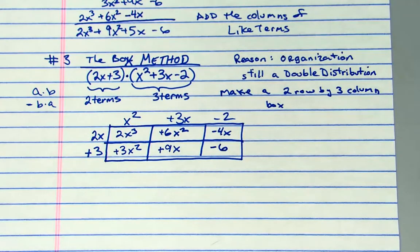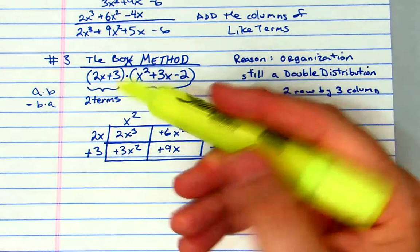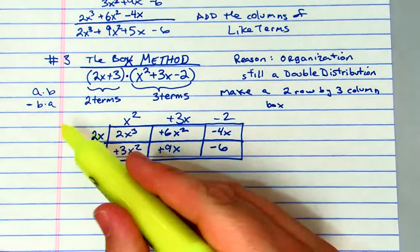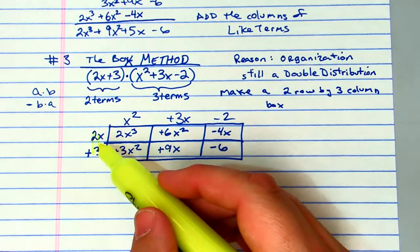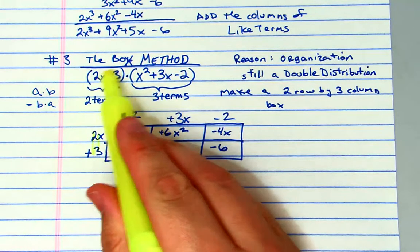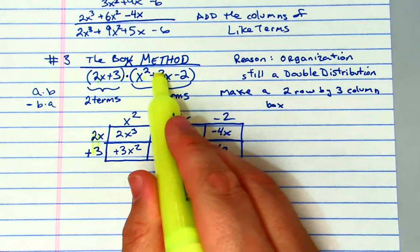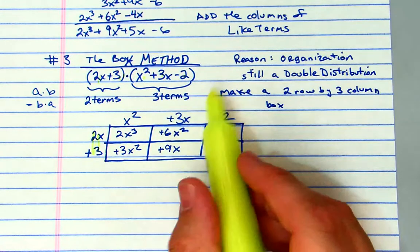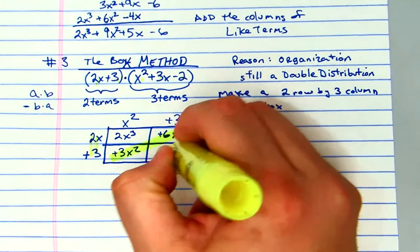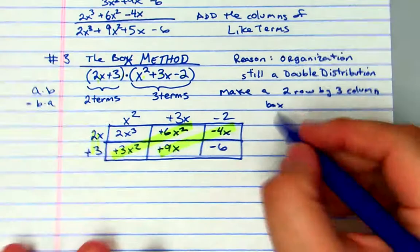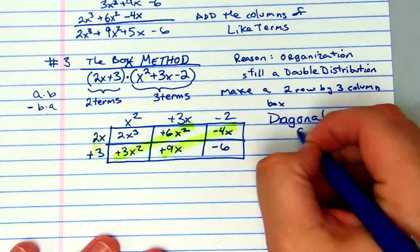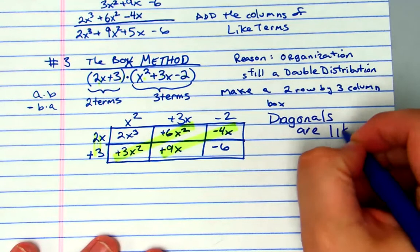Now one of the special things is if you wrote this in standard form, which you did, everything should be in decreasing order of power, and then we have decreasing order of power here, so we have our constant here. Something special happens: the diagonals of the box are like terms.